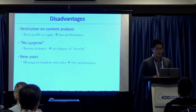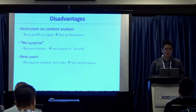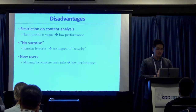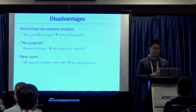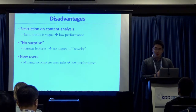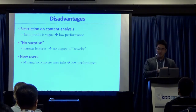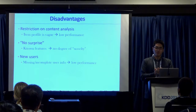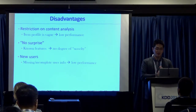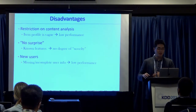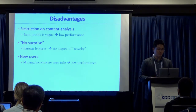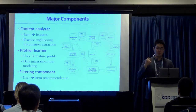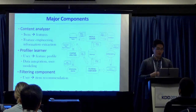There are also disadvantages. First, if the profile is low quality, recommendation results are low quality — garbage in, garbage out. Second, there's no surprise — you're using a fixed finite set of features, and anything measured is based on these features, so you cannot surface surprising recommendations outside that feature set. The major components are: a content analyzer that transforms items into features, a profile learner that transforms users into user feature vectors, and a filtering component that compares these two and gives a similarity score.